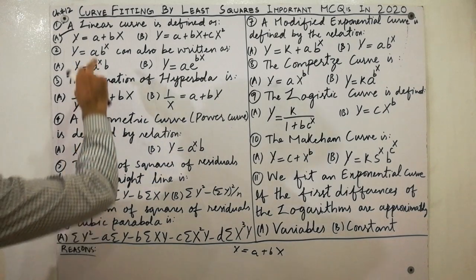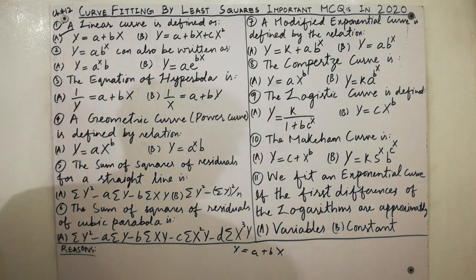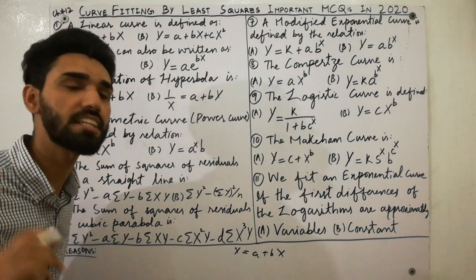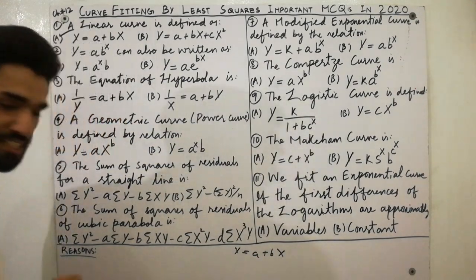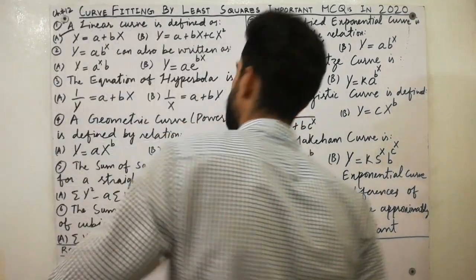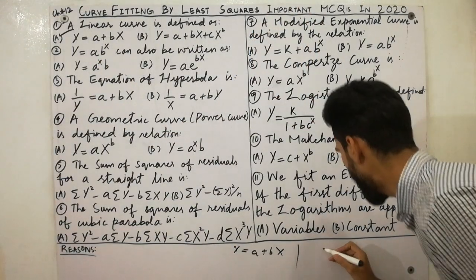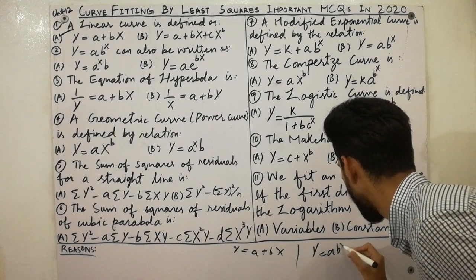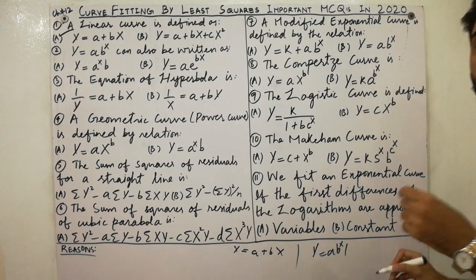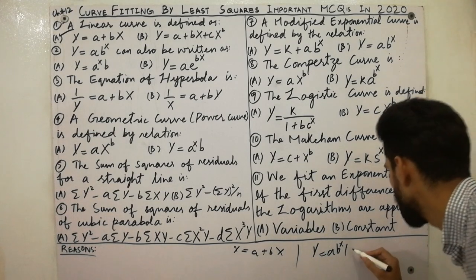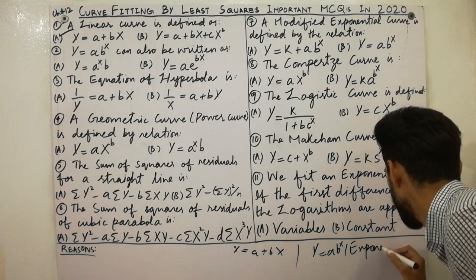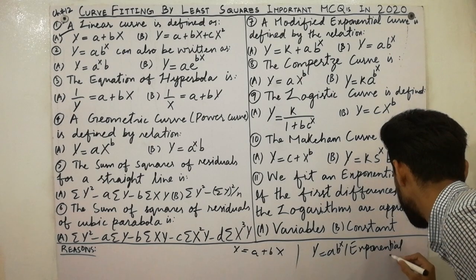The second point: y is equal to a·b raised to the power x — must remember this is called an exponential curve. Also, y is equal to a·e raised to the power bx is also called an exponential curve.